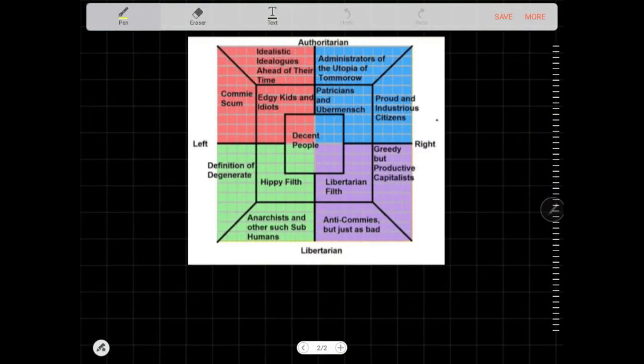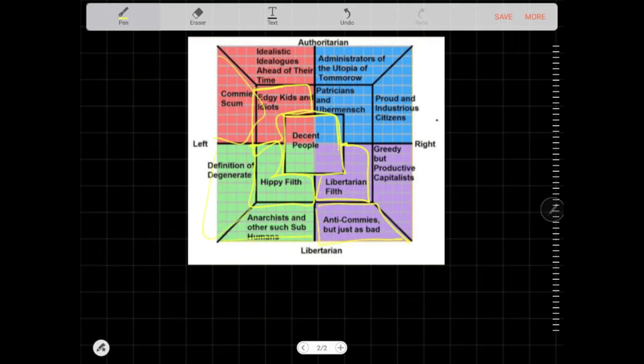This is a more memeable political compass. Some decent people in the middle. Libertarian filth, hippie filth, edgy kids and some idiots, commies. Anti-commie but just as bad as commie, subhumans. Gritty but productive, proud industrialist citizens, patriot and labor. Utopia tomorrow, idealistic ideology.